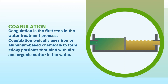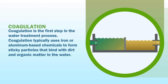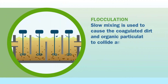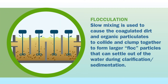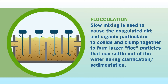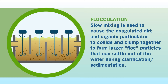Coagulation is the first step in the water treatment process. It typically uses iron or aluminum based chemicals to form sticky particles that bind with dirt and organic matter in the water. Slow mixing is then used to cause coagulated dirt and organic particulates to collide and clump together to form larger floc particles that can settle out of the water later in the process.